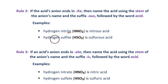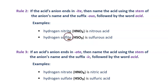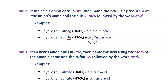Next example, hydrogen sulfite. The anion ends in "-ite", so rule number two applies. Take the beginning of that word — the "sulf" part, from sulfur — and end it with "-ous". It becomes sulfurous acid.